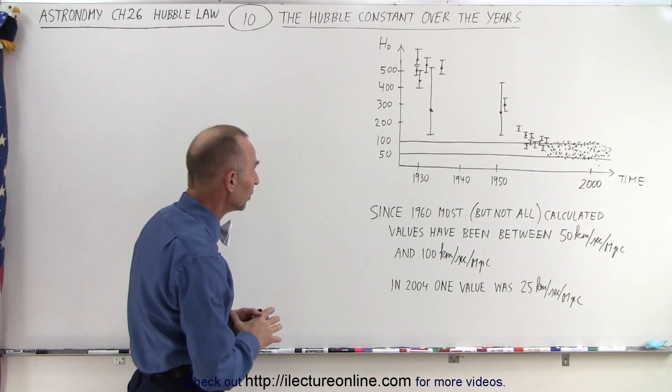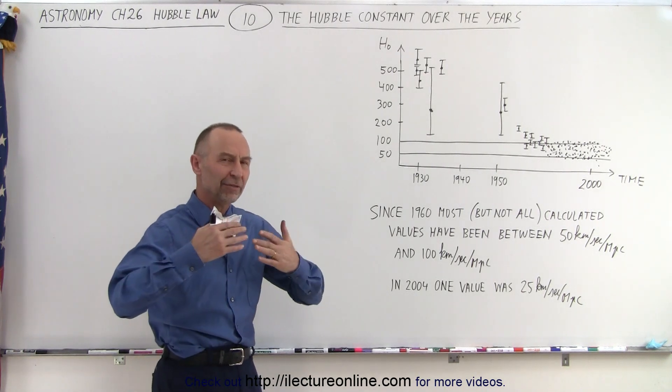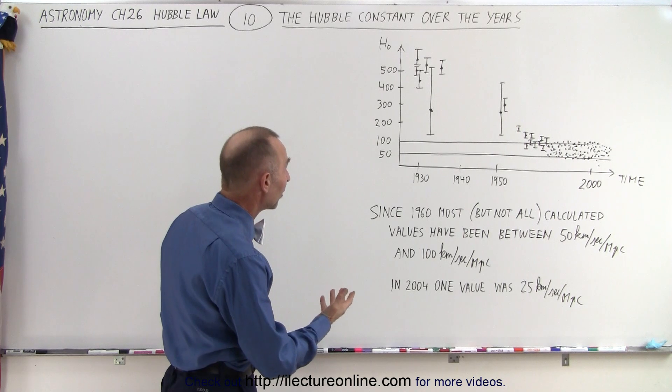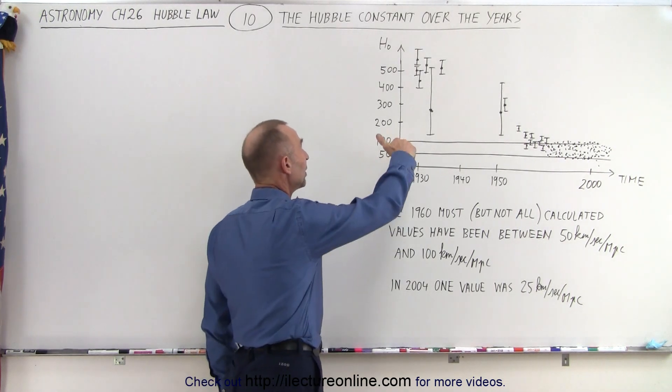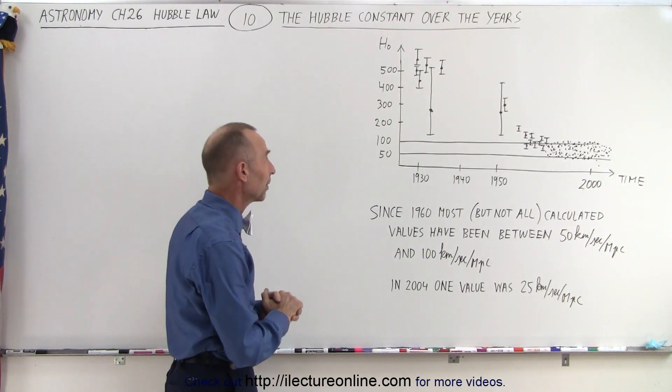Initially, back in the days of Hubble when he was trying to figure out what was going on with the universe as every galaxy appeared to be moving away from us, the initial estimates of the Hubble constant varied anywhere between 400 and 600 kilometers per second per megaparsec.